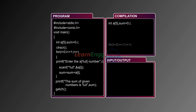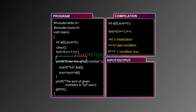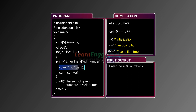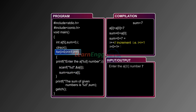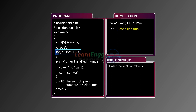A for loop is used to get input values and calculate their sum. The initial value of i is zero; the condition 0 < 1 is true. The printf statement prints 'Enter the value of a[0]', and scanf gets the value from the user. Sum is calculated as sum = sum + a[0], where sum is 0 and a[0] is 7, so sum becomes 7. The increment operator increases i by one. Now i equals 1, the condition is still true, and the loop continues.